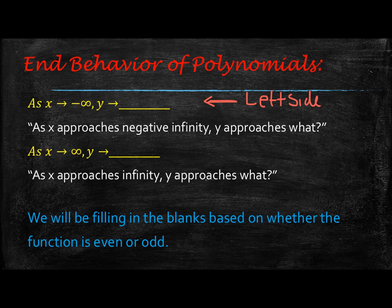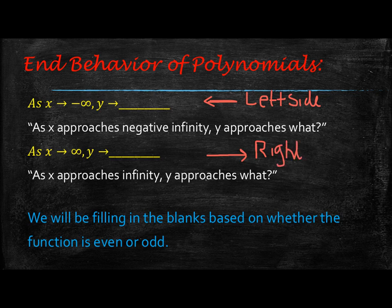The next part in yellow says: as x approaches positive infinity. Well, as x approaches positive infinity, positive infinity is on the right. So now we're going to be saying what's happening on the right side of the graph. If the right side of the graph is going down, then you'll say y is approaching negative infinity. If the right side is going up, then you will say y is approaching positive infinity.